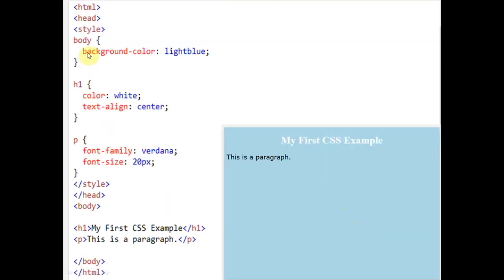You can see here this internal Cascading Style Sheet example. In case of external CSS, we have to store and maintain a separate file with the extension .css, which must be included in our HTML program. For internal CSS, we start the program with HTML, then head, then we write the style tag. Inside the style, for the body, we are mentioning the formatting — the background color is light blue.